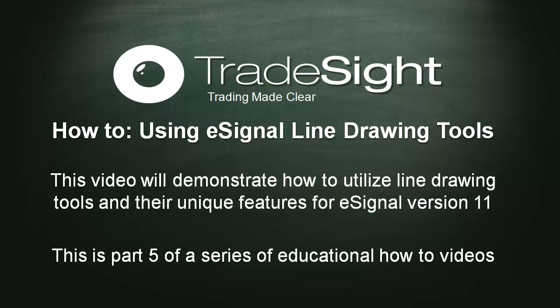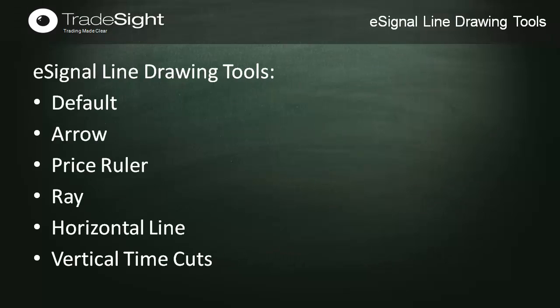This video will demonstrate how to utilize line drawing tools and their unique features for eSignal version 11. We're going to take a look at the basics — the system defaults, the arrow tool, the price ruler, how to use the ray, and how to relocate it on a chart. We're also going to look at the horizontal line and the vertical time cuts that can be applied to your charts to keep them clean and show you the information you need to make your trading clearer and more profitable.